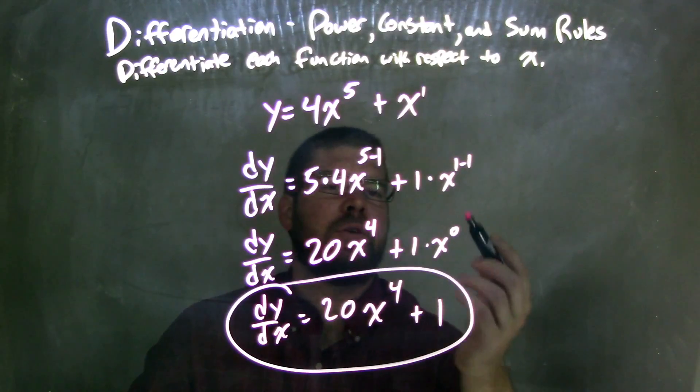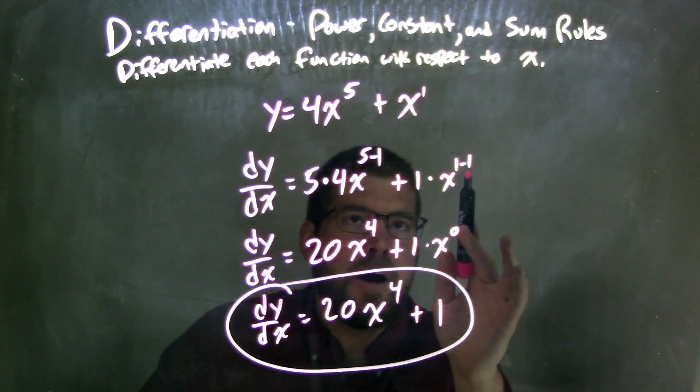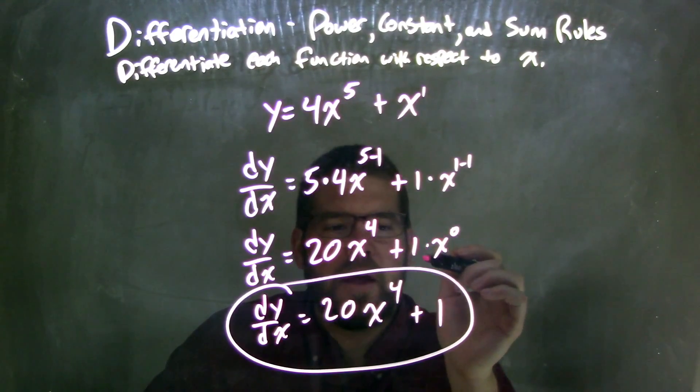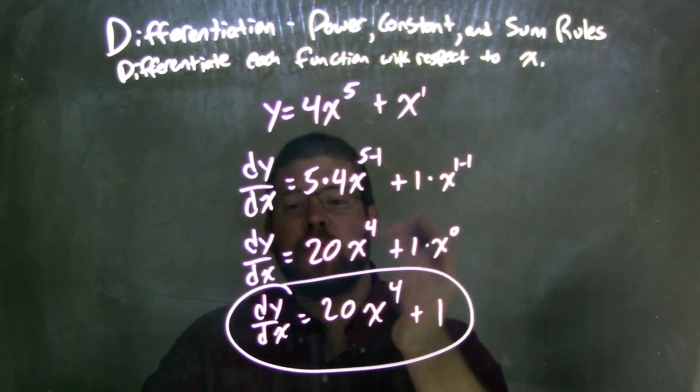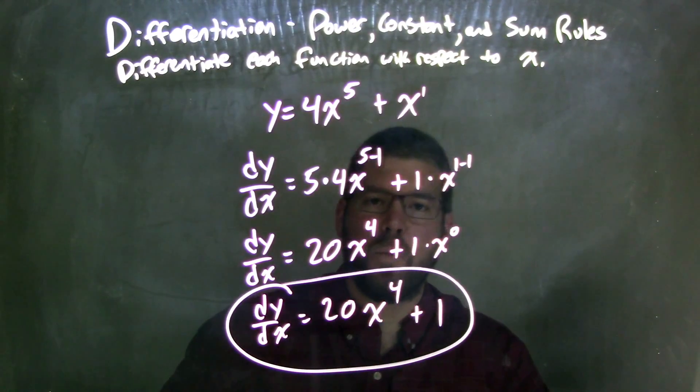But if you want to show the steps, I'll show it in this video here. We have x to the 1 minus 1 power. If you use the power rule, we brought down a 1 up front, and then we subtract the exponent by 1, giving me x to the 0 power. x to the 0 power is just 1. So that leaves us with just a 1 here. And so our final answer here is just dy/dx is equal to 20x to the 4th plus 1.